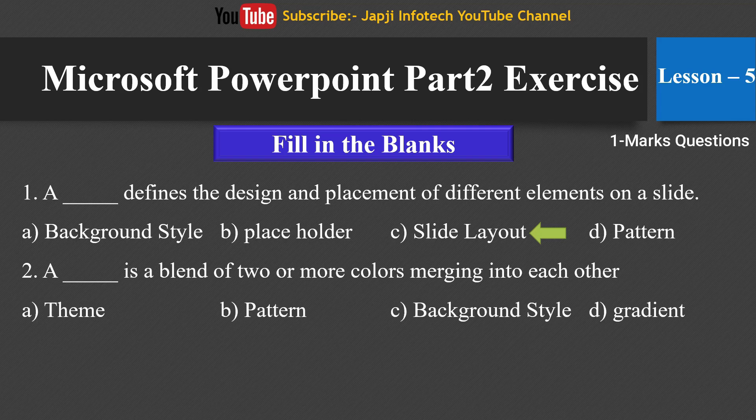The second blank: a dash is a blend of two or more colors merging into each other. The options are theme, pattern, background style, and gradient. The right answer is gradient — a gradient is a blend of two or more colors merging into each other.